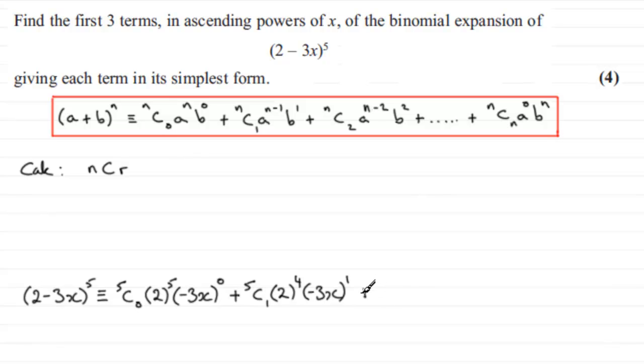And we go on to the third term. So that's going to be 5C2. Reduce the power by 1 on the a part. So that's 2 now to the power 3. And increase this b part by power, or another 1. So that's going to be minus 3x all squared to the power 2. So it did say, write down the first three terms in ascending powers of x. So we've got the first three terms here. Try not to leave it like this though, because there would be more terms, and say plus, and so on.